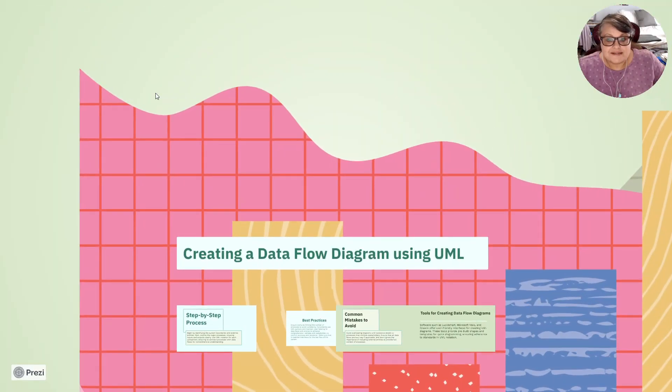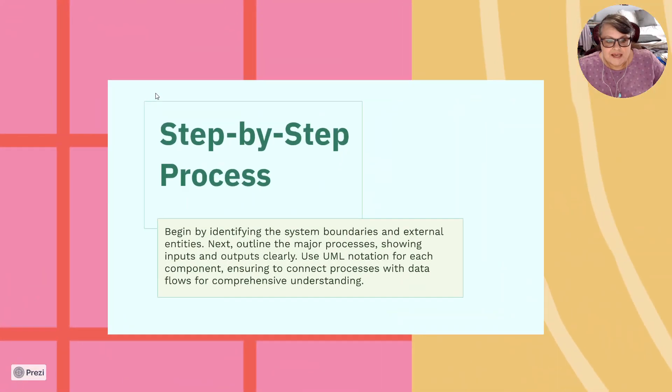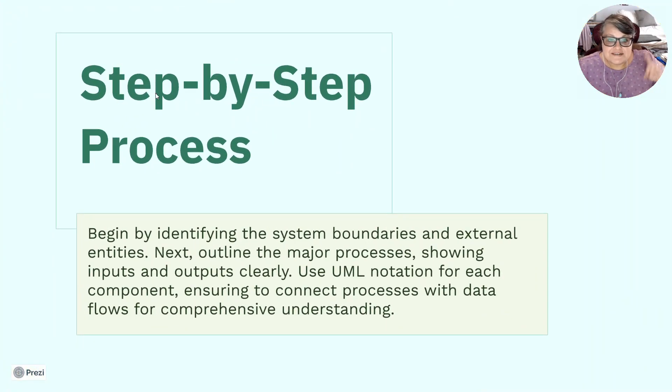Let's talk about creating data flow diagrams. It's a step-by-step process. Begin by identifying the system's boundaries and external entities. Next, outline the major processes, showing inputs and outputs clearly. Use UML notation for each component, ensuring to connect the process with the data flows for comprehensive understanding. The process is very important because the process is what transforms the data. So you're going to see what's transforming the data and where the data goes and where it comes back. The data store is what keeps it. And your database is really related to the data store and the system.